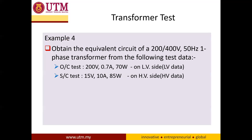For example four, we obtain the equivalent circuit of a 200/400 volt, 50 Hz single-phase transformer from the following test data. For the open circuit test, the readings of voltage, current, and power are taken from the LV side, which is now the primary. For the short circuit test, the primary side is short-circuited and the readings are obtained from the secondary side, which is the 400 volt side.